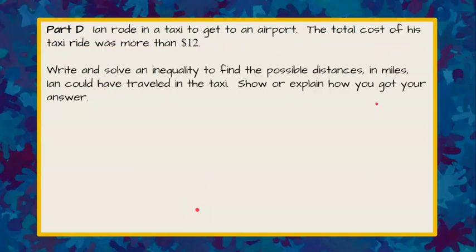Part D. Ian rode in a taxi to get to the airport. The total cost of his taxi ride was more than twelve dollars. Write and solve an inequality to find the possible distances Ian could travel in the taxi. Show or explain how you got your answer. Go ahead and pause now.